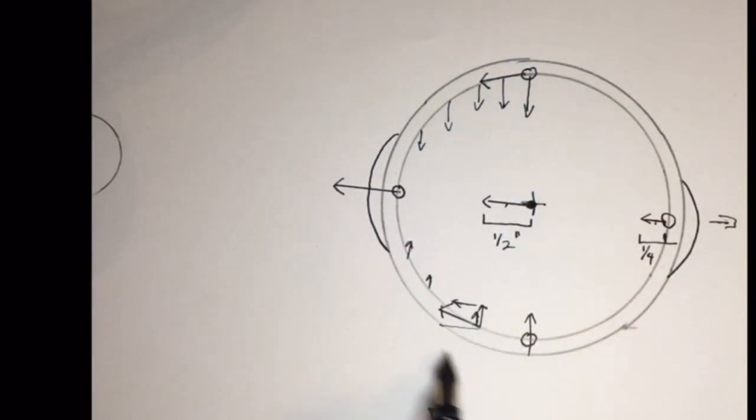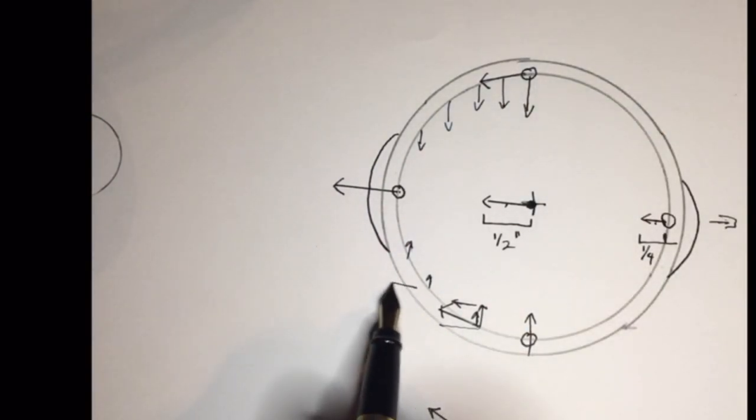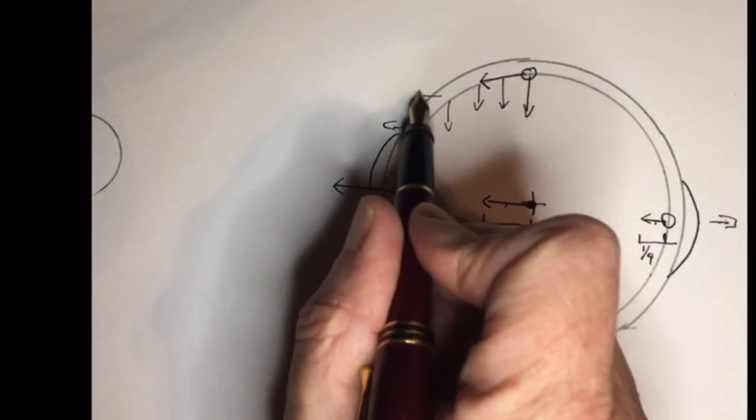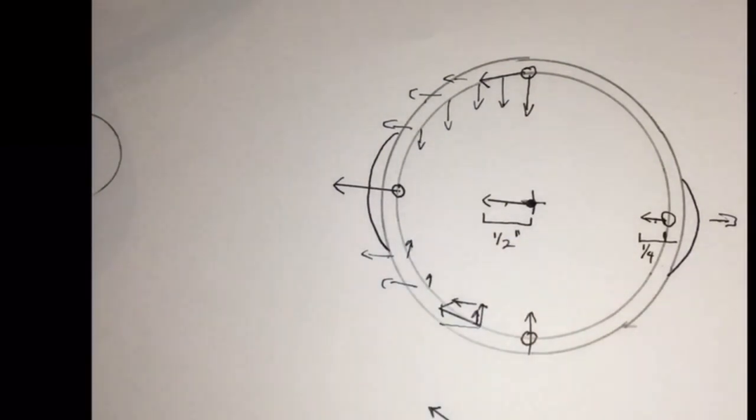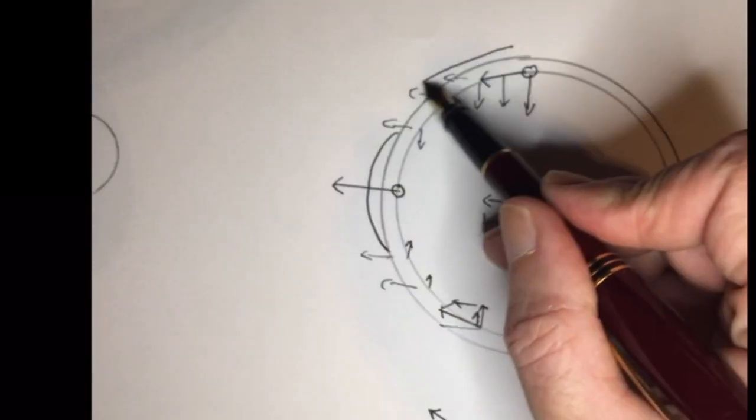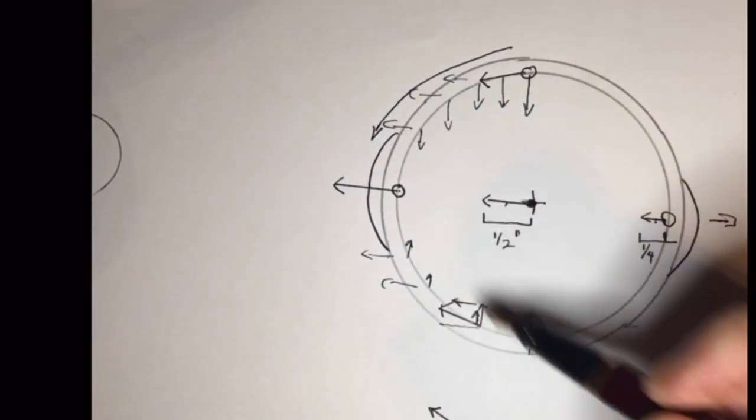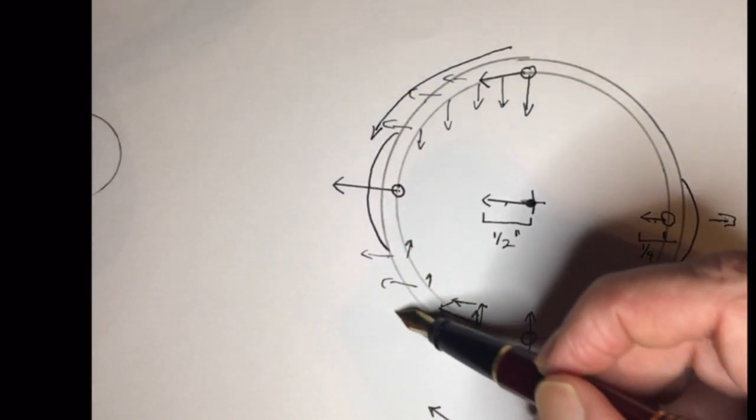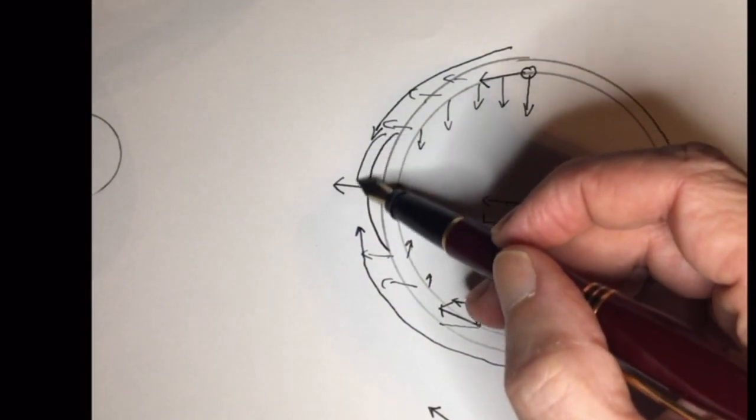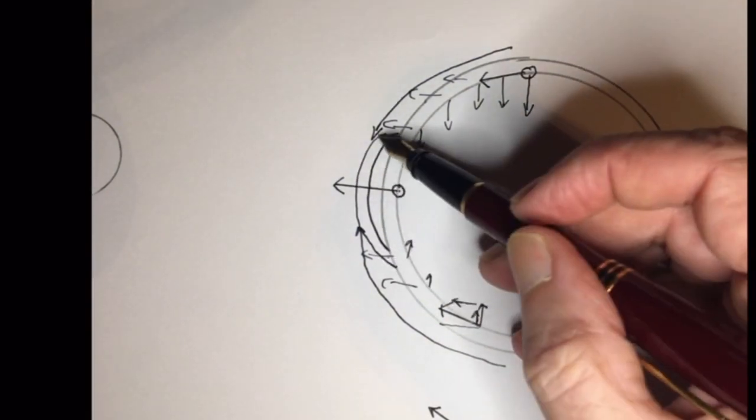Plus there's also going to be vectors going in this direction like that. The end result is water is going to be moved in this direction and in this direction up towards this bulge and that bulge is going to get larger.